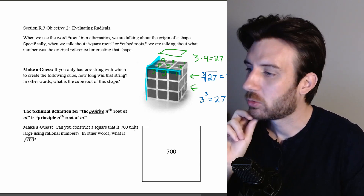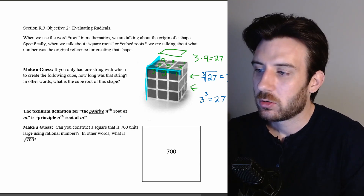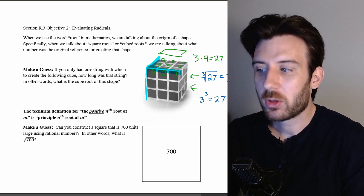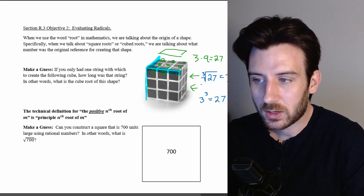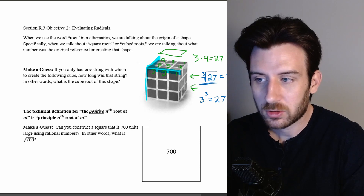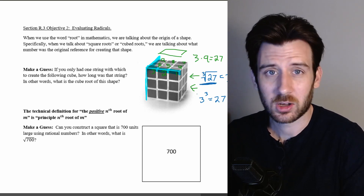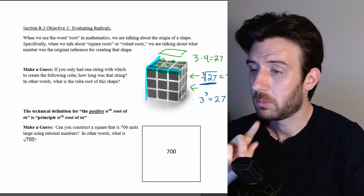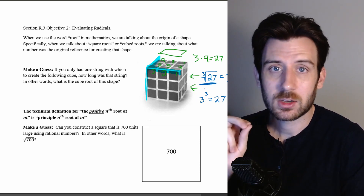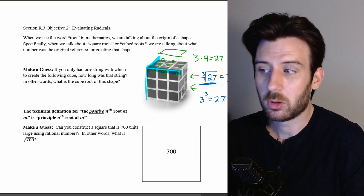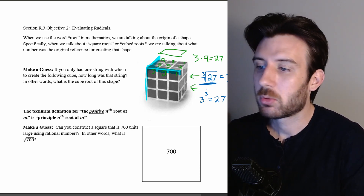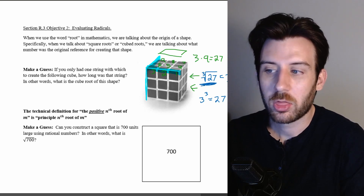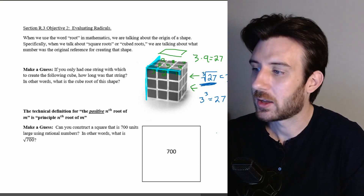The technical definition for the positive nth root of m is the principal nth root of m. All we mean by that is that when I write this without the plus or minus symbol, I am referring to the principal nth root — where in this situation it would be the principal third root, or cubed root, we could say it.